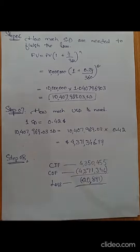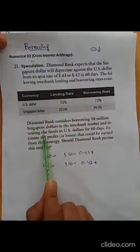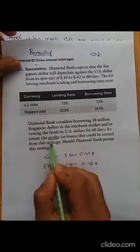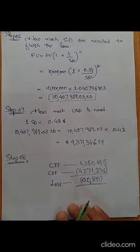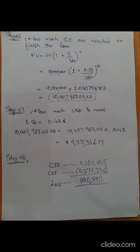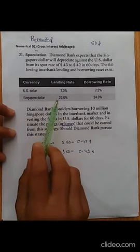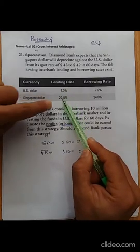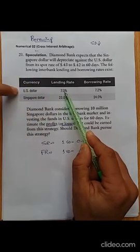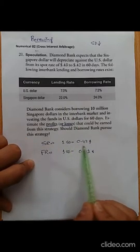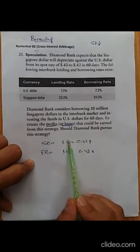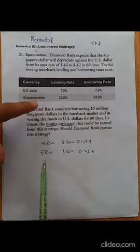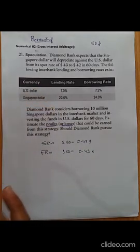Even though we correctly followed the borrowing rule — borrow when foreign currency depreciates — and the numerical also instructed us to borrow, we still ended up with a loss. The rule itself is not wrong. The problem is the mismatch I identified earlier: the Singapore interest rate is roughly three times the US rate, but the exchange rate relationship is only about two-to-one, not three-to-one. This mismatch between interest rate differential and exchange rate differential caused the loss.